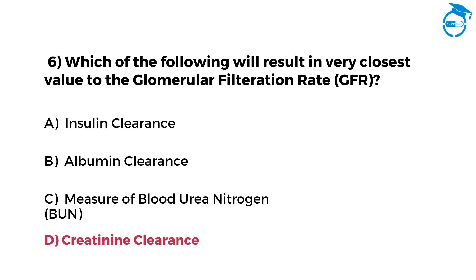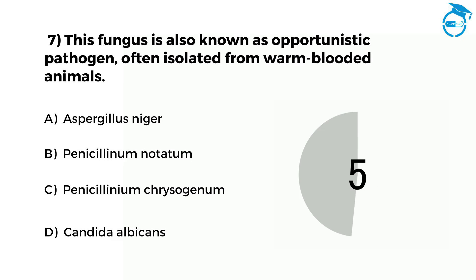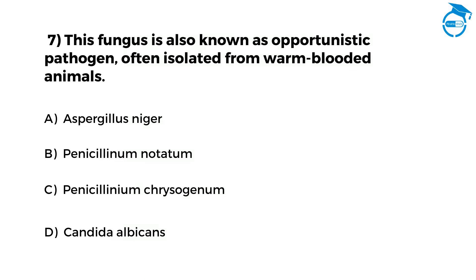Few more questions left. This fungus is also known as an opportunistic pathogen, often isolated from warm-blooded animals — option A Aspergillus niger, option B Penicillium notatum, option C Penicillium chrysogenum, option D Candida albicans. Post your answer in comments. The right option is D, that is Candida albicans.